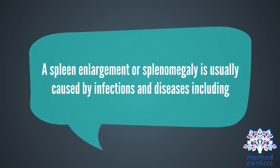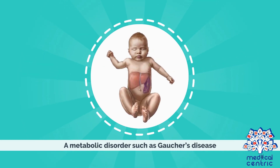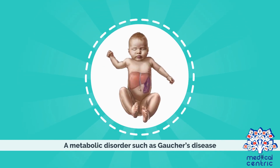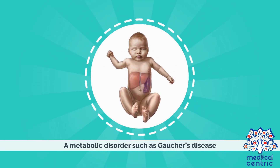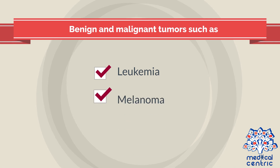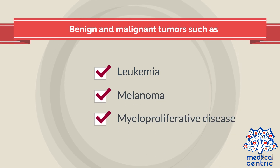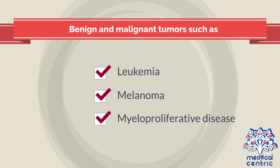Causes: A spleen enlargement, or splenomegaly, is usually caused by infections and diseases, including a metabolic disorder such as Gaucher's disease, benign and malignant tumors such as leukemia and melanoma, and myeloproliferative disease.